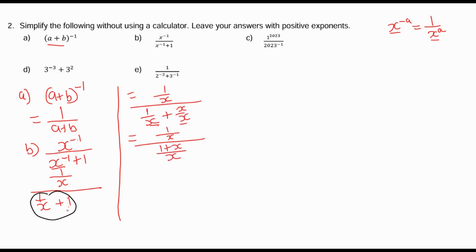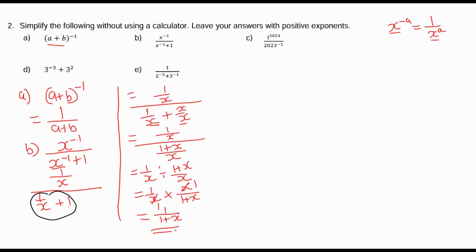Now this is the same as 1 over x divided by (1 plus x) over x, which equals 1 over x times x over (1 plus x). We cross-multiply: x divided by x is 1, so we are left with 1 over (1 plus x). That's the answer for part b.